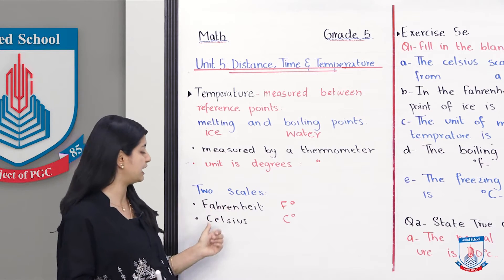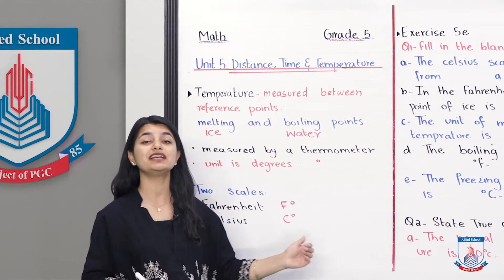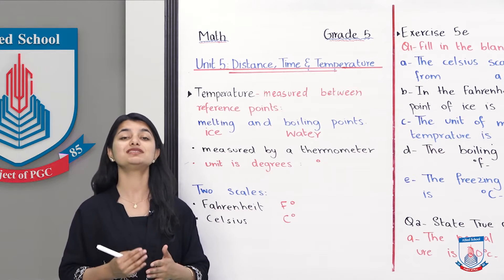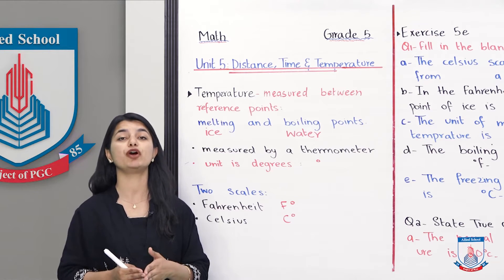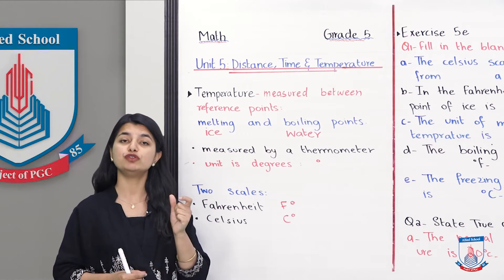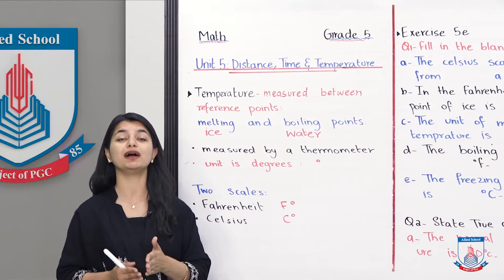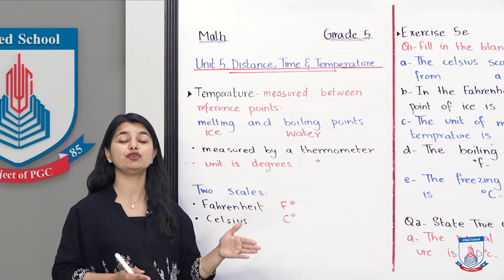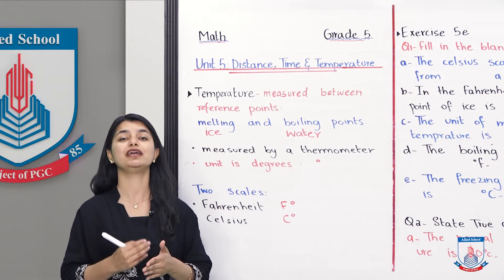Celsius is named after a Swedish scientist whose name was Celsius. On that scale, the melting point of ice or freezing point of water starts from zero degrees, and the boiling point of water goes to 100 degrees. From zero to 100, we have 100 divisions in different degrees.